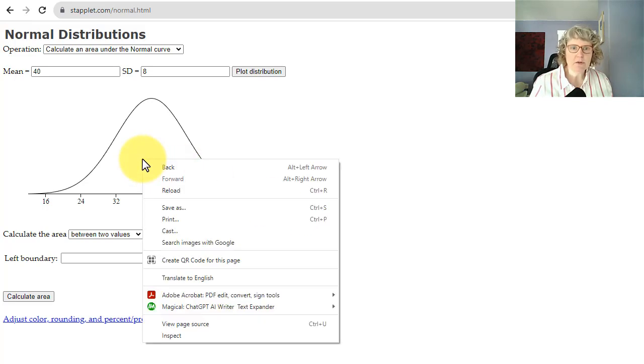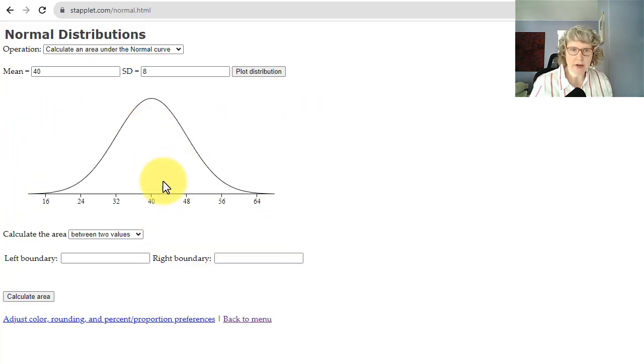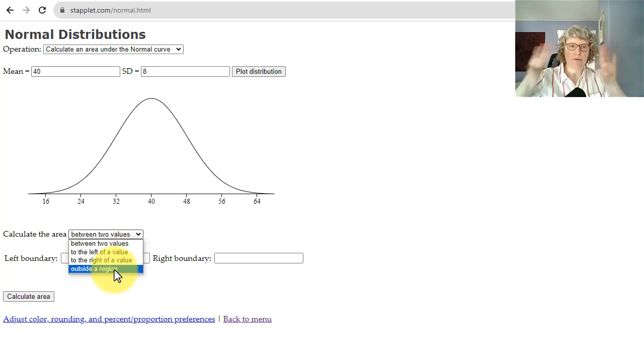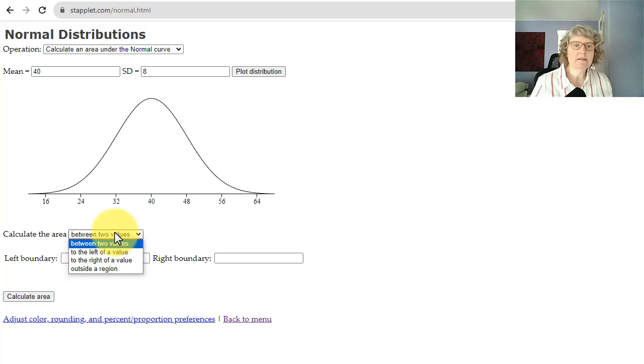So we've got our beautiful normal curve here. You could copy this. If you right click on it, you could take a little screenshot of that. And this one doesn't have a place to type in the label. So you would write or type your label underneath or above to label this graph. So now we have four different options for calculating the area. Remember area is probability. We can go between two values, to the left, to the right, or outside of a region. Between is inside two values.